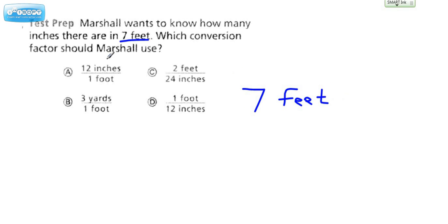And let's think about what we know about the word factor. Factor means you're going to multiply something. Now, we're going to be choosing one of these to multiply with 7 feet.